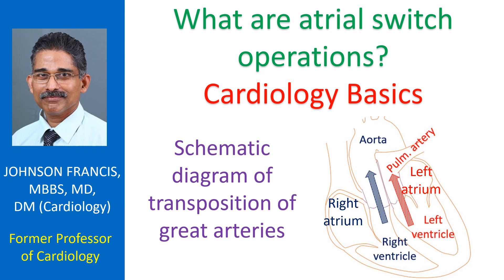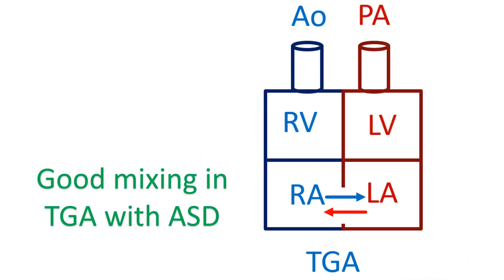Atrial switch operations were the initial operations developed for the treatment of transposition of great arteries. In transposition of great arteries, the aorta arises from the right ventricle and pulmonary artery from the left ventricle. Normally, the aorta originates from the left ventricle and pulmonary artery arises from the right ventricle. In transposition of great arteries, systemic venous return is pumped back into the body without being sent to the lungs for oxygenation. Blood returning from the lungs is pumped back into the lungs. Thus, systemic and pulmonary circulations are in parallel, unlike the normal series relationship.